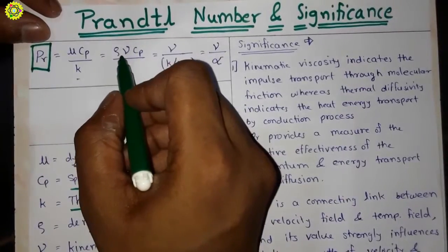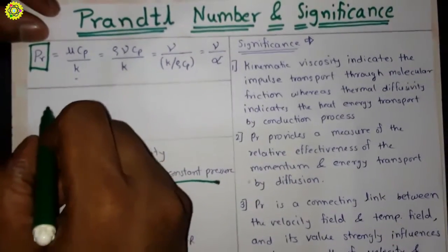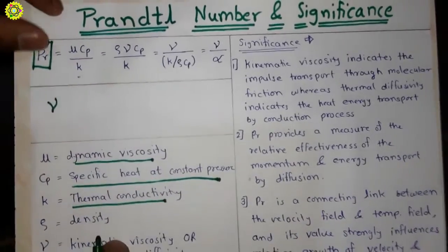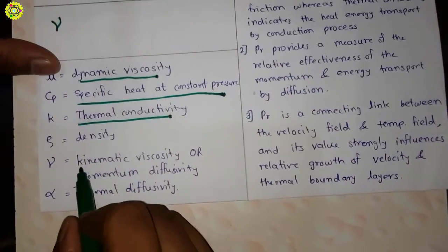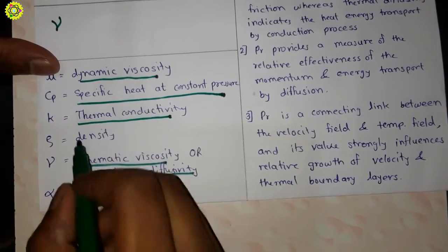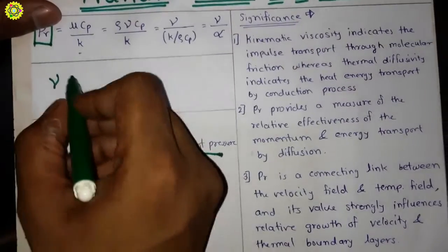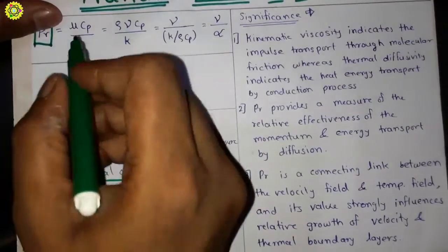...as you can see: rho*nu*CP upon K. Here friends, nu is kinematic viscosity or it is also called as momentum diffusivity, and rho is density. So here nu, that is kinematic viscosity, is given by the equation...